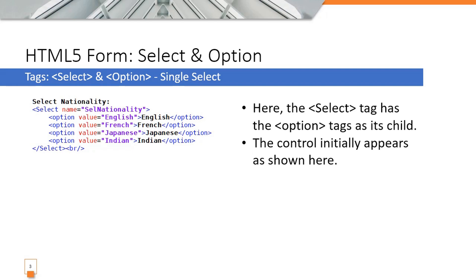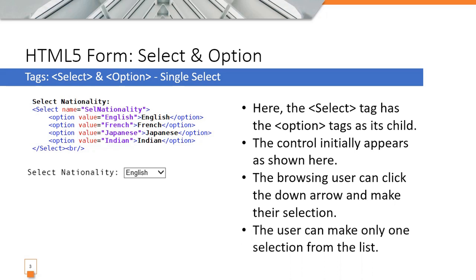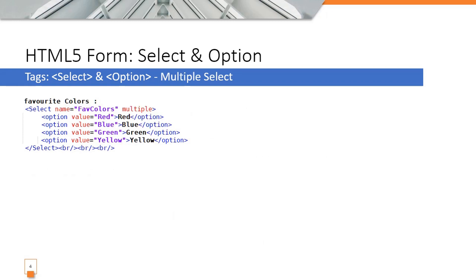When the browser renders this, it initially appears as a drop-down. When you click the down arrow you can see the values from the option tags. The user can click the arrow and make their selection, but can only pick one item — for example, Japanese.